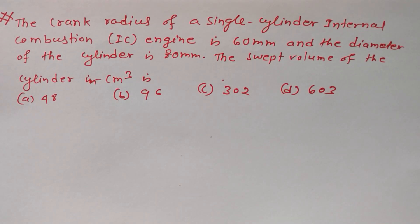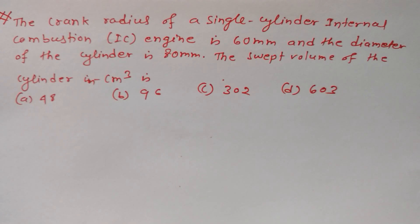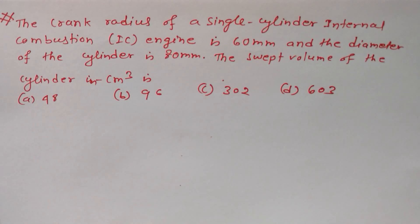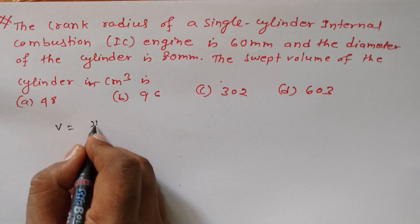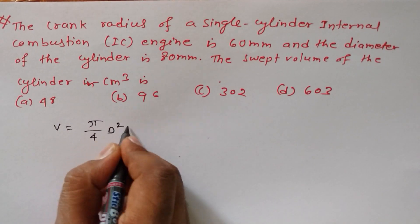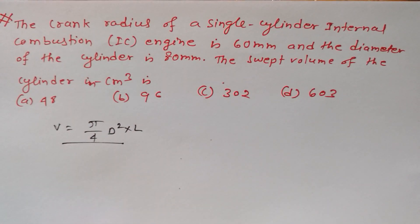I got another question, this question asking in GATE. So in this question we have to find out swept volume. I have already read this question. So what is the formula for finding out swept volume? V is equal to pi by 4 D square into L.